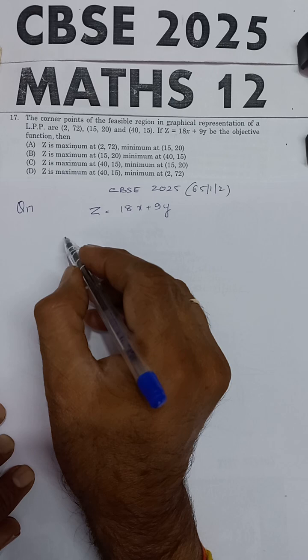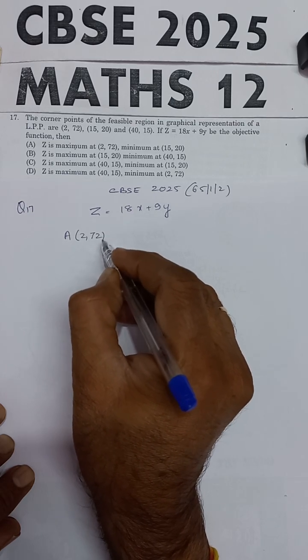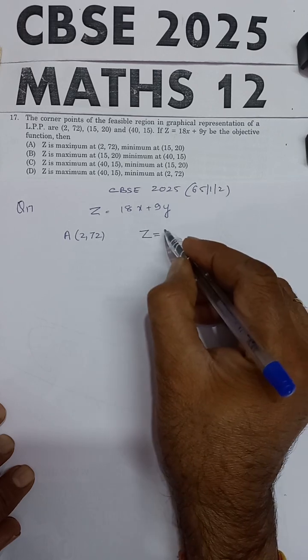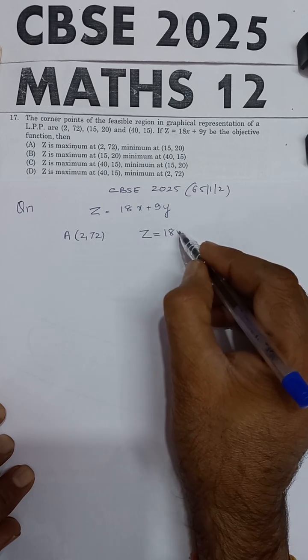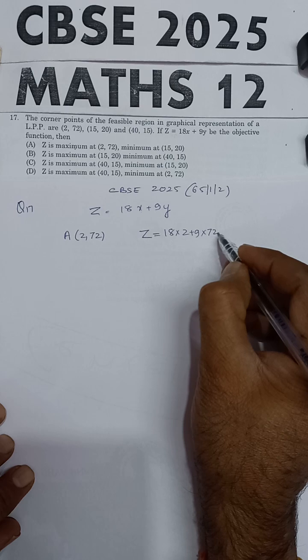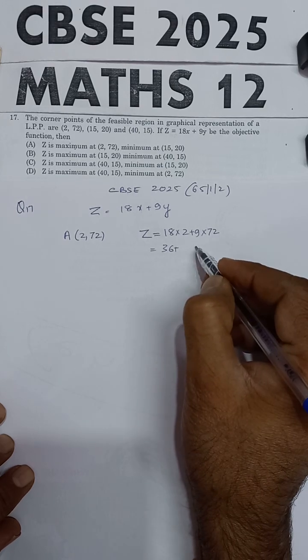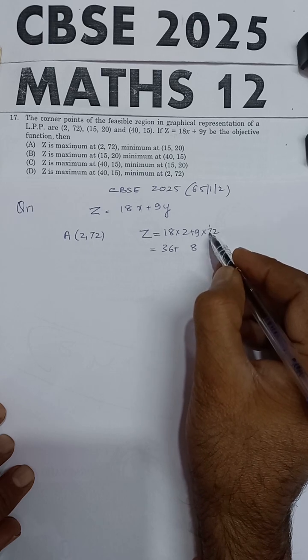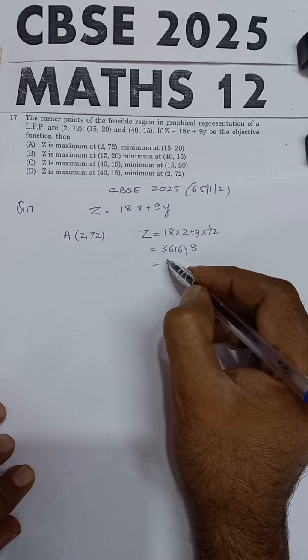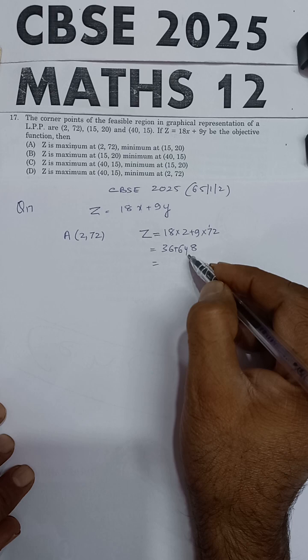First, we will take point A (2,72). At this point, the value of the objective function will be 18 times 2 plus 9 times 72. 18 times 2 is 36, and 9 times 72 is 648. So 648 plus 36 equals 684.